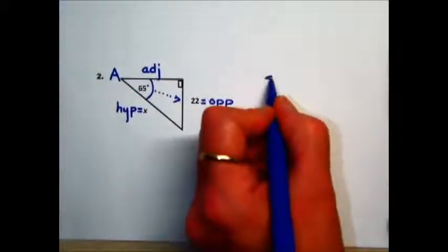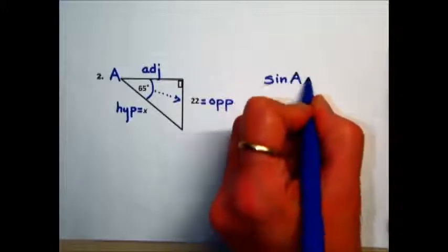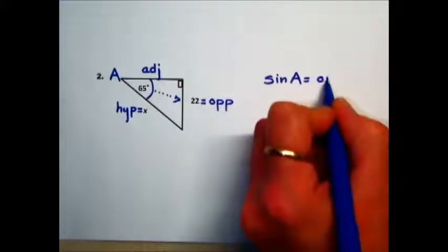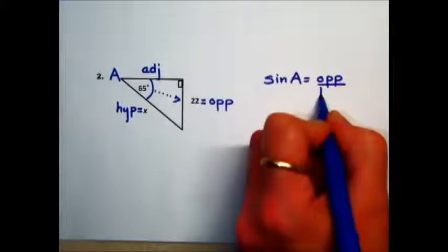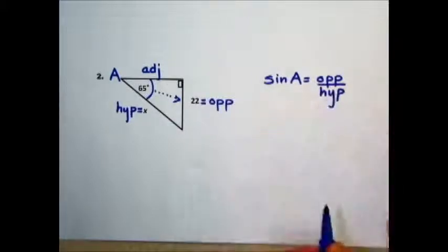Using the sine ratio for a right triangle, sine of the angle is equal to opposite over hypotenuse to solve for the missing length.